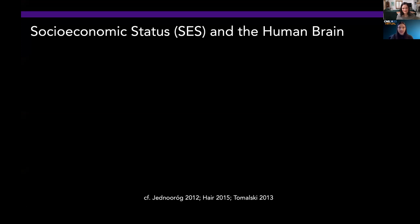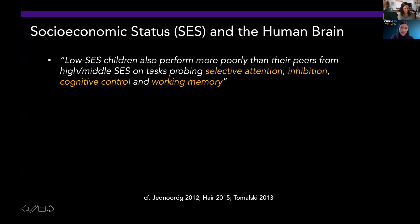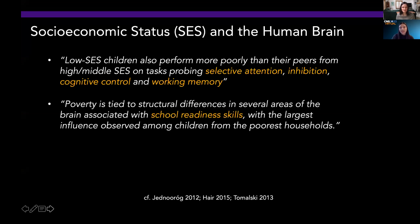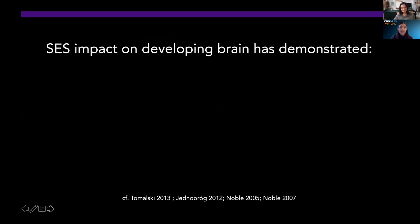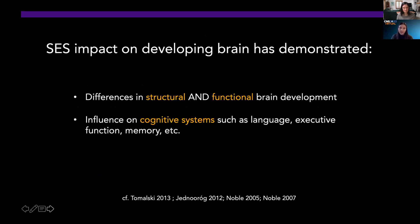Previous studies have explored the interaction between SES and the human brain. Children from low socioeconomic status backgrounds perform more poorly than their peers from high or middle SES backgrounds, specifically on tasks probing selective attention, inhibition, cognitive control, and working memory. Additionally, poverty is tied to structural differences in the brain in areas closely associated with school readiness skills. In some studies examining earlier stages of life, there are disparities in brain activity pointing to early risk for language and attention difficulties. So we see that SES does have an impact on structural and functional brain development, as well as cognitive systems such as language, executive function, and memory.